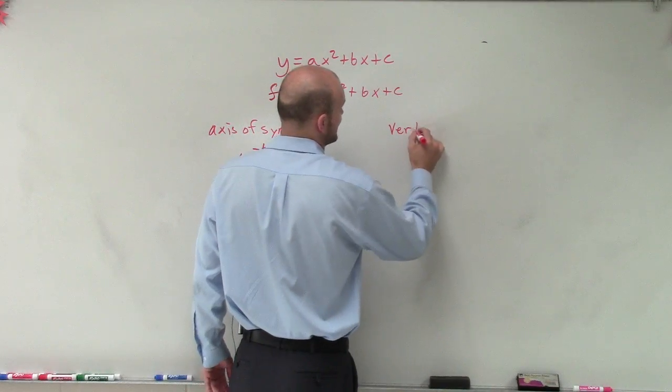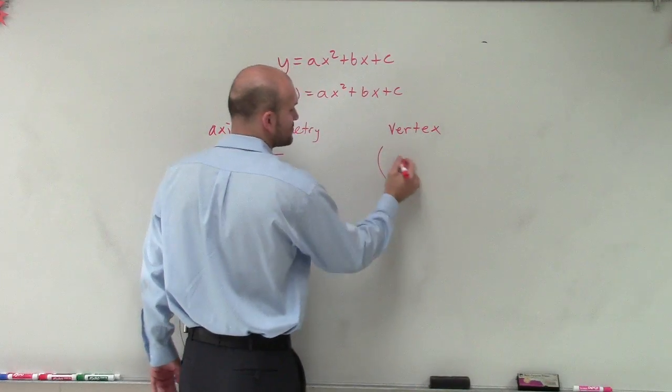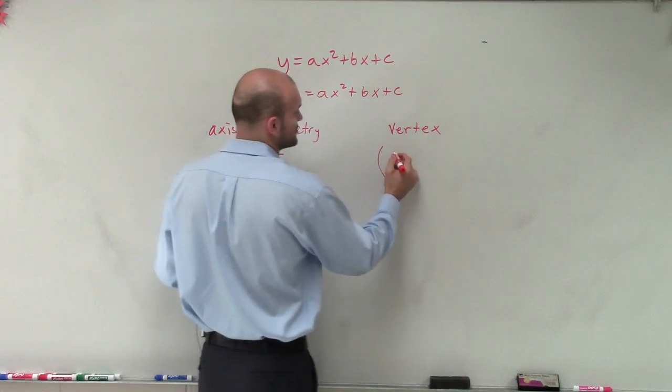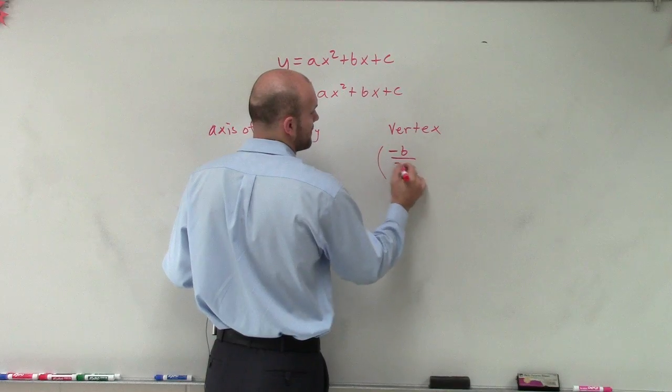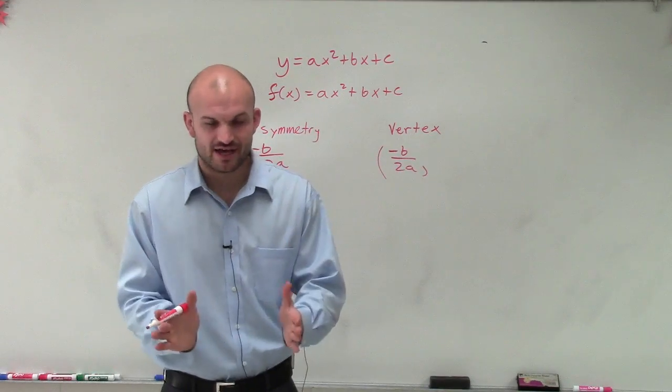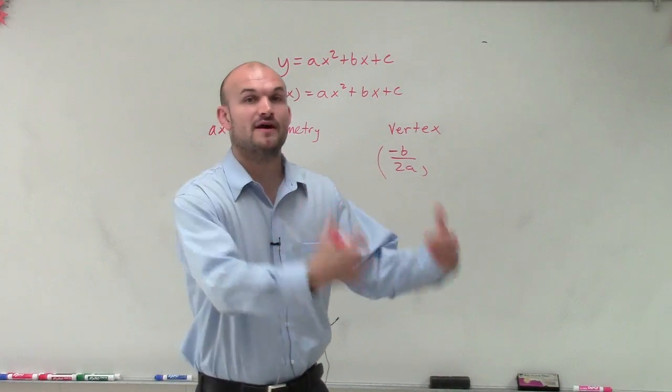And then if I want to find the vertex, we're still going to find, remember, that vertex has to go through your axis of symmetry. So the x value is going to be the same. Then remember, when we created a table, what we did is we found x values, we plugged them in, and then we found the y value.